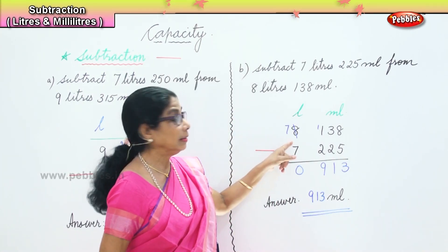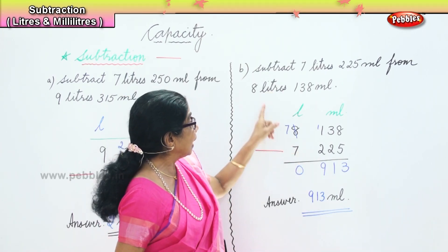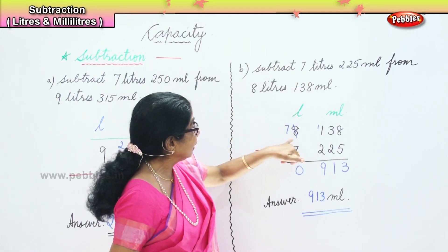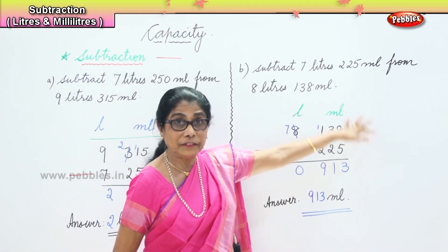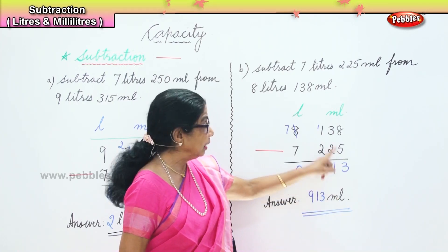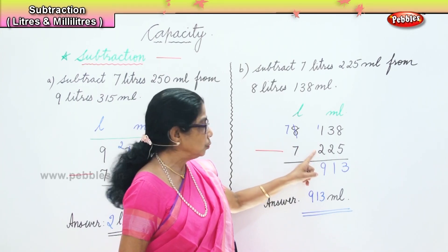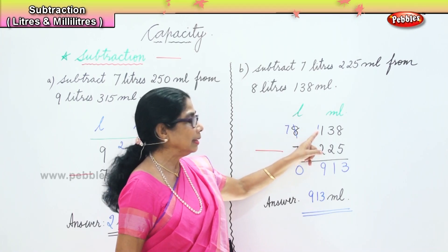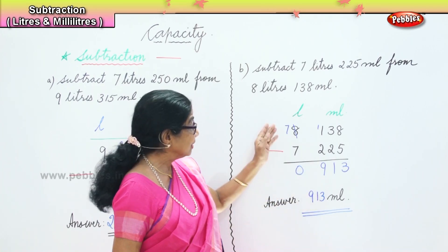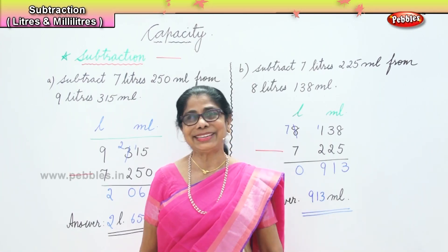Let's recap: subtract 7 liters 225 milliliters from 8 liters 138 milliliters. 8 minus 5 is 3. 3 minus 2 is 1, but here you have 1 and the bigger number 2, so we borrow 1, bring it here — 10 plus 1 is 11. 11 take away 2 is 9. 7 take away 7 is 0. Our answer is 913 milliliters.